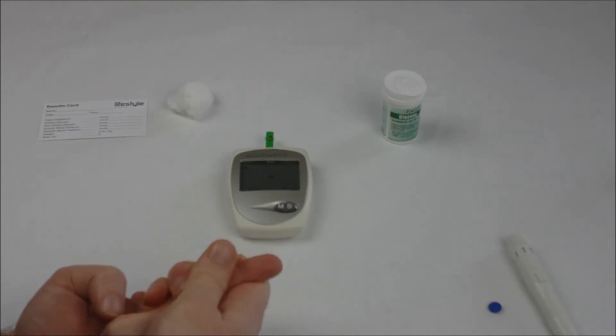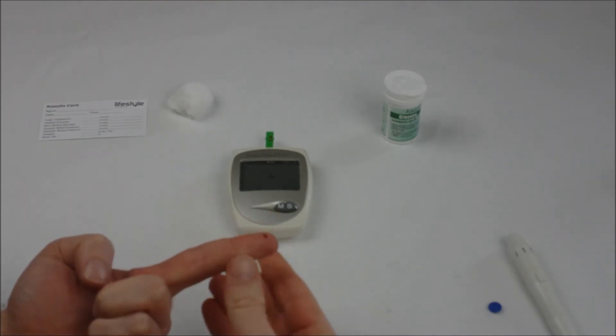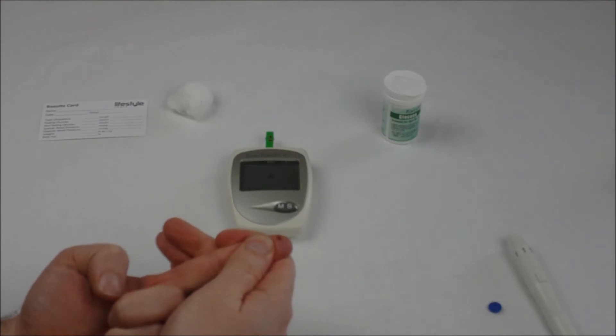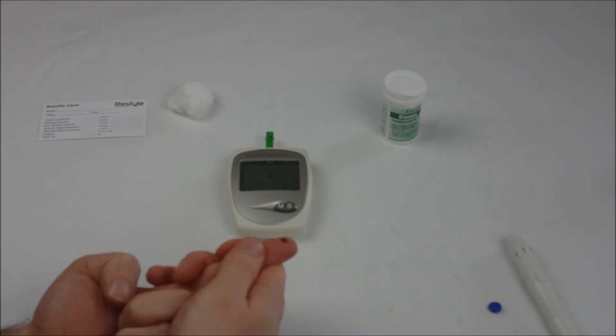Put your lancing device to one side and allow your pin prick to bleed. Don't squeeze your finger too much as this will create a diluting effect and reduce your blood glucose level. Allow it to bleed as naturally as possible.